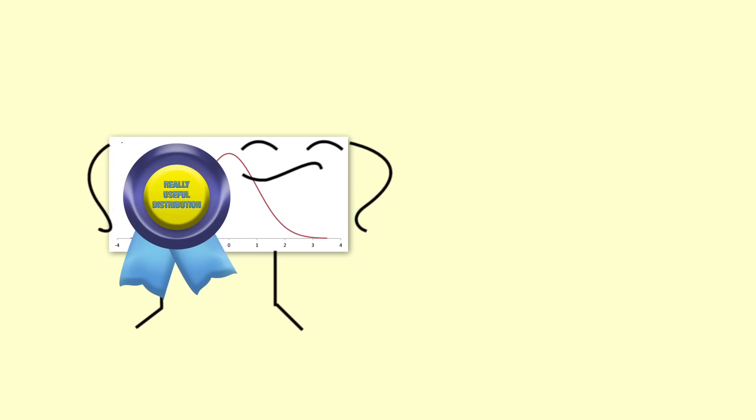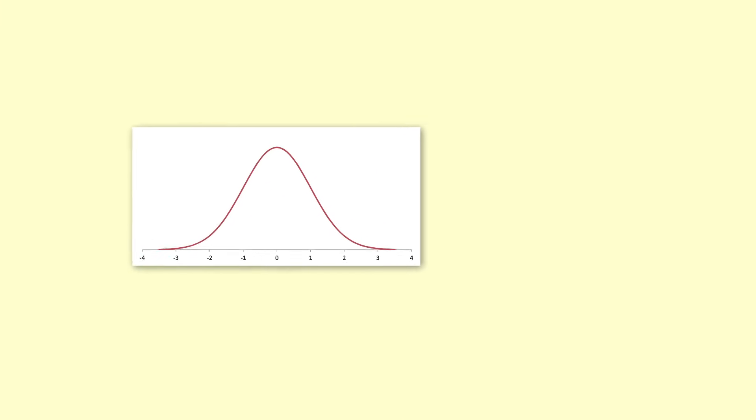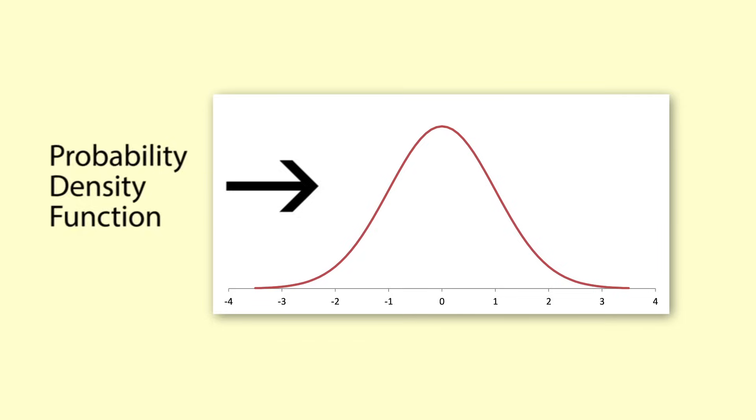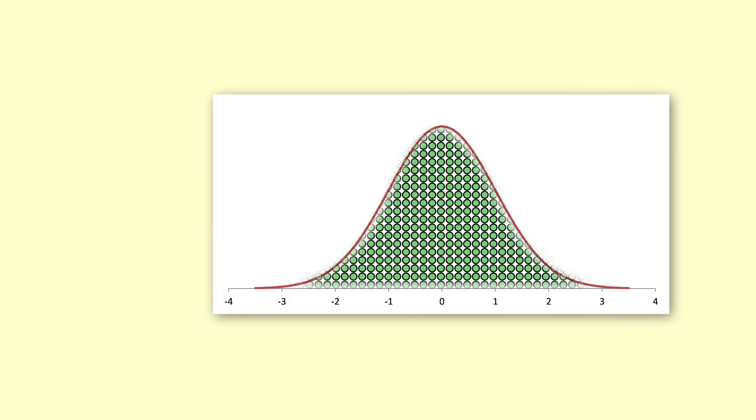We have looked at the bell-shaped graph a lot in this video, and now I'm going to explain how it works. That bell-shaped graph is called the PDF or probability density function. To find the probability that an outcome is within a certain range, we look at the area under the graph within that range. We could think of it as the probability that a randomly chosen pixel occurs within that range.